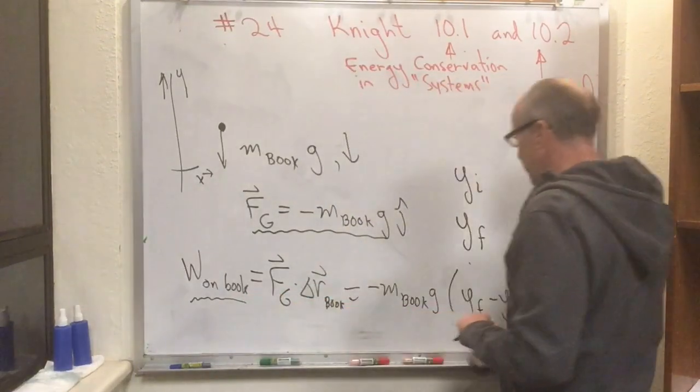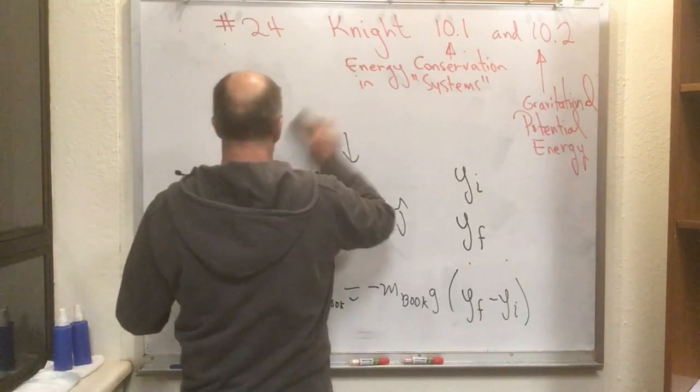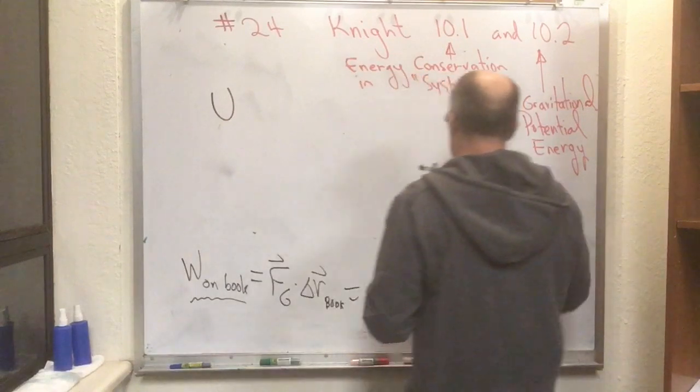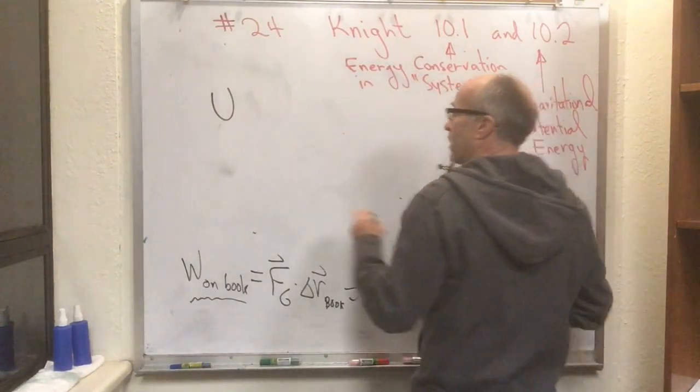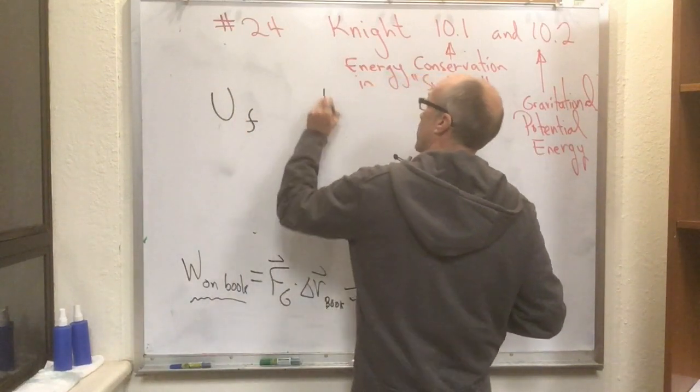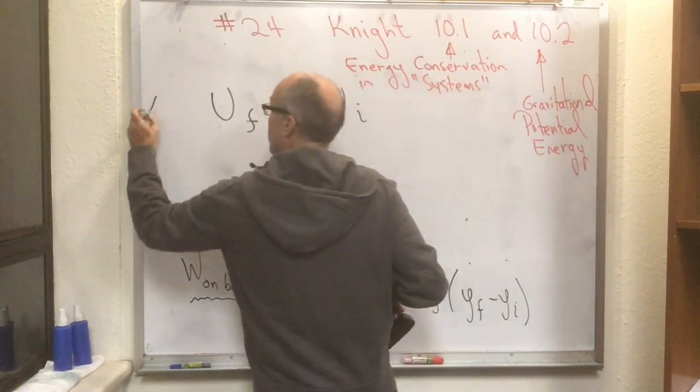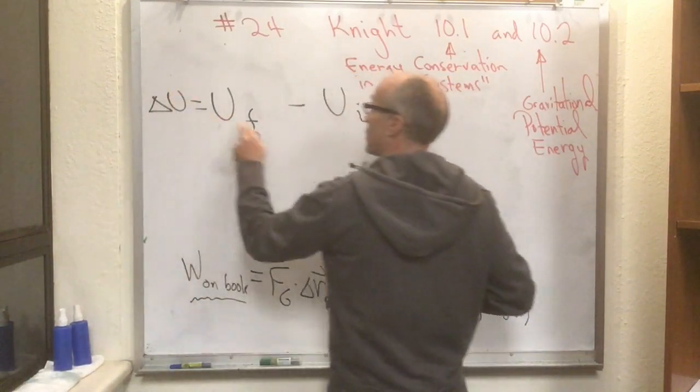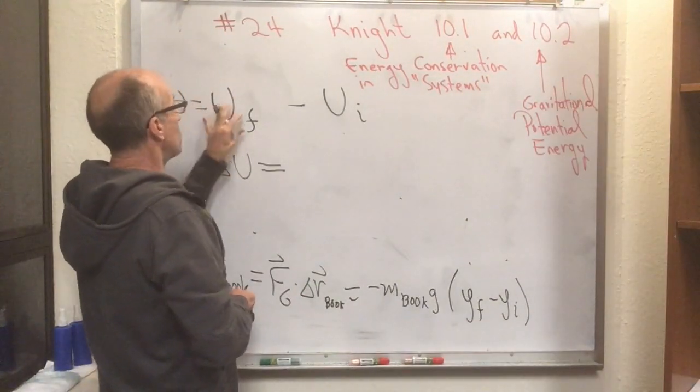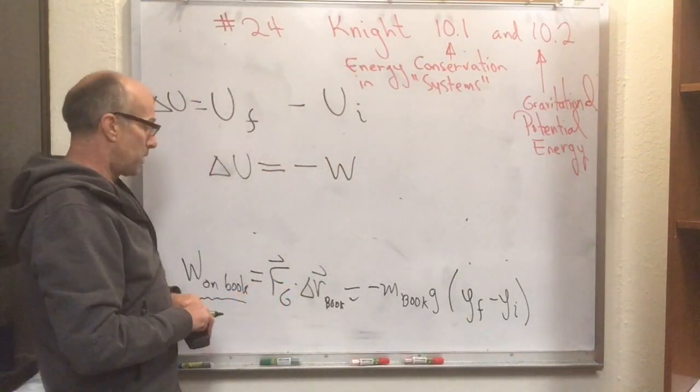So, work done on the book was this, change in the kinetic energy of the book is this. We're going to say that there's something called the potential energy in the gravitational field, U, and we're going to say that this potential energy had a final value, and this potential energy had an initial value, and that we have a change in the potential energy, which is its final value minus initial value. Whatever energy is withdrawn from this is whatever energy was given to the book.